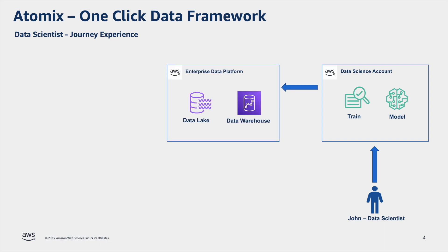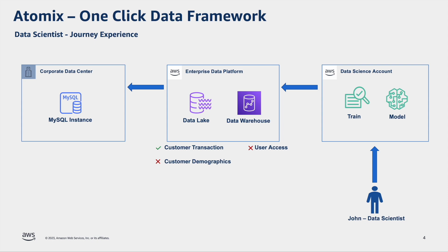He goes into the enterprise data platform and searches for the customer demographics data and customer transactions data. He was able to find customer transactions data in one of the data warehouse tables, but he doesn't have access to that, so he has to raise a request to get access. On the other hand, he couldn't find any table containing customer demographics data in the enterprise data platform. But he knows that one of the on-prem databases in MySQL has the customer demographics information in the customer master table. So he needs to bring in the demographics data from the on-prem database to the enterprise data platform, and even after bringing in the data, he will not have access to the table by default — so he has to raise a request to get access as well.